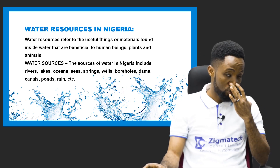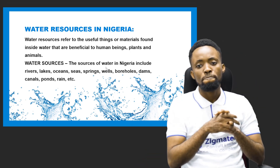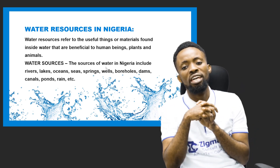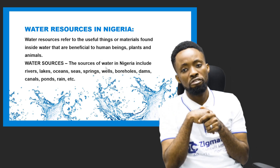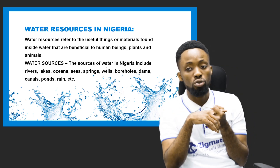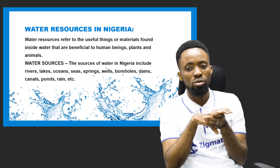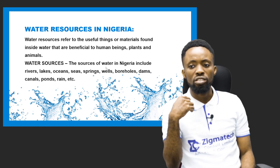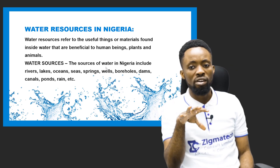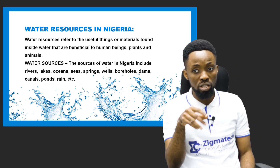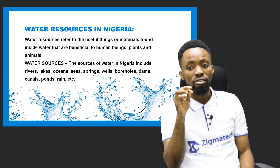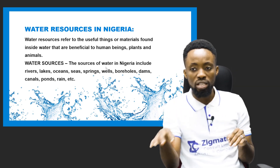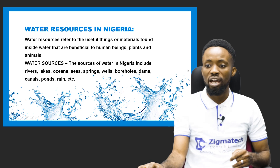The next resource is water resources. Water resources refer to the useful materials we can find inside water that are beneficial to human beings, plants, and animals. The various water sources in Nigeria include rivers, lakes, the ocean, seas, springs, wells, boreholes, dams, canals, ponds, and rain. These are the water sources found in Nigeria.